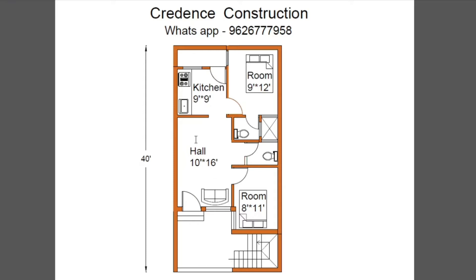Next, we will place the TV. The first bedroom size is 8 feet by 11 feet. This room has 1 window, size is 3 feet by 3 feet.